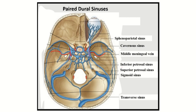Then the inferior and superior petrosal sinuses, which lie in the petrous part of the temporal bone. Here is the petrous part of the temporal bone on both sides. In the superior part is the superior petrosal sinus, and in the inferior part of the petrous bone is the inferior petrosal sinus. They lie on both sides — on this side is the superior petrosal sinus and this is the inferior petrosal sinus.